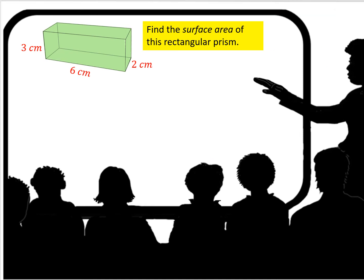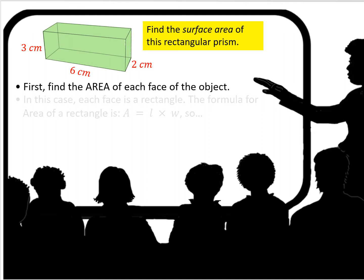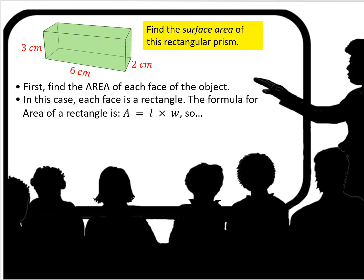How about if we try to find the surface area of this rectangular prism? First, you're going to find the area of each face of the object. In this case, each face is a rectangle.